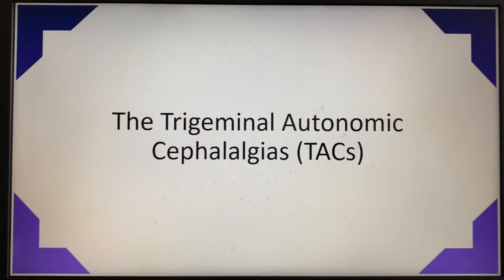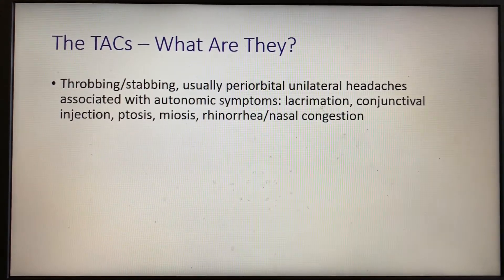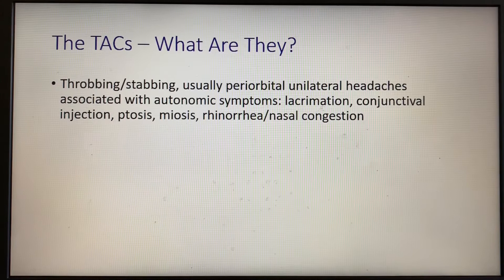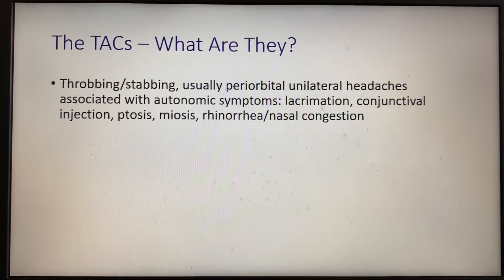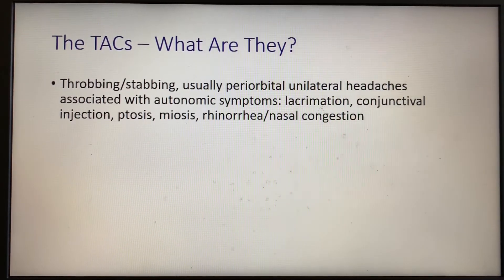On today's video, we're going to talk about the trigeminal autonomic cephalalgias, or the TACs. The TACs are a subfamily of headaches that usually feature throbbing or stabbing pain in a periorbital distribution. These headaches tend to be side-locked, so they tend to occur on one side of the face or the head, and they always tend to stay on that same side. With all of the TACs, there should be some degree of autonomic symptoms, which earns them their name.